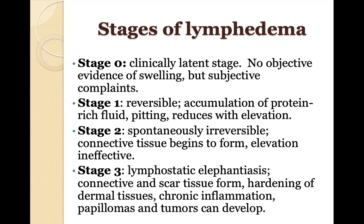In stage two, which is spontaneously irreversible, connective tissue begins to form and elevation is ineffective — someone may go to bed with a swollen limb and wake up still swollen. There is more brawny edema and fibrotic tissue changes. Stage three is lymphostatic elephantiasis with severe and extensive connective and scar tissue formation, hardening of dermal tissues, chronic inflammation, frequent infections, and possible presence of papillomas — warty-type projections on the skin.